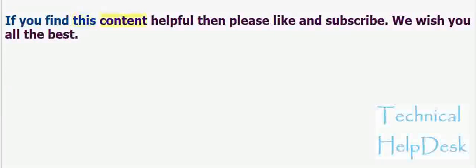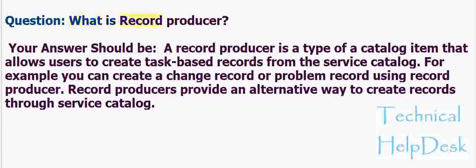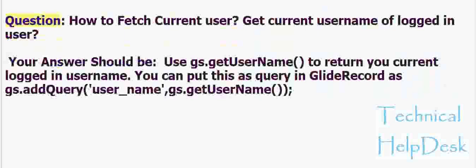Question: What is a record producer? A record producer is a type of catalog item that allows users to create task-based records from the service catalog. For example, you can create a change record or problem record using a record producer. Record producers provide an alternative way to create records through the service catalog.